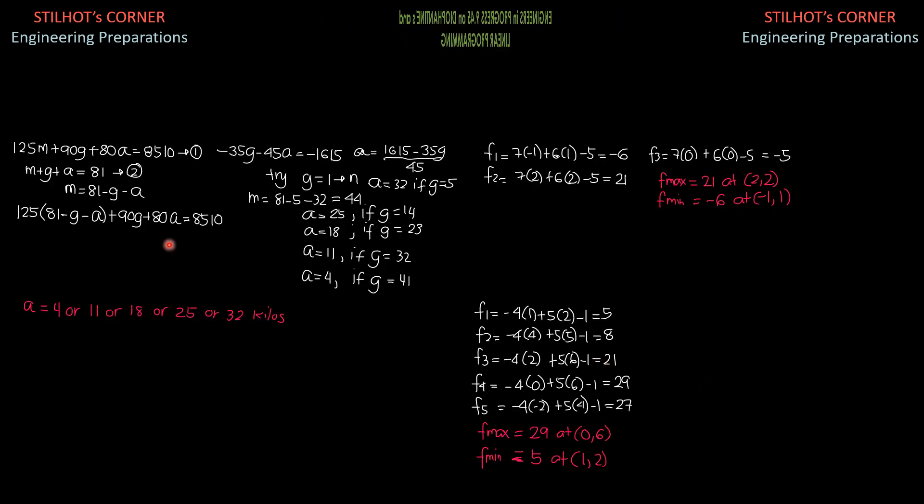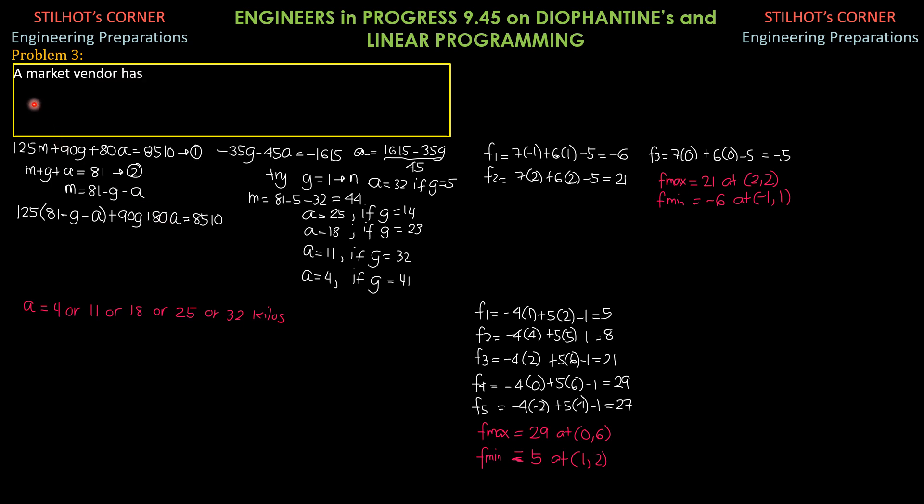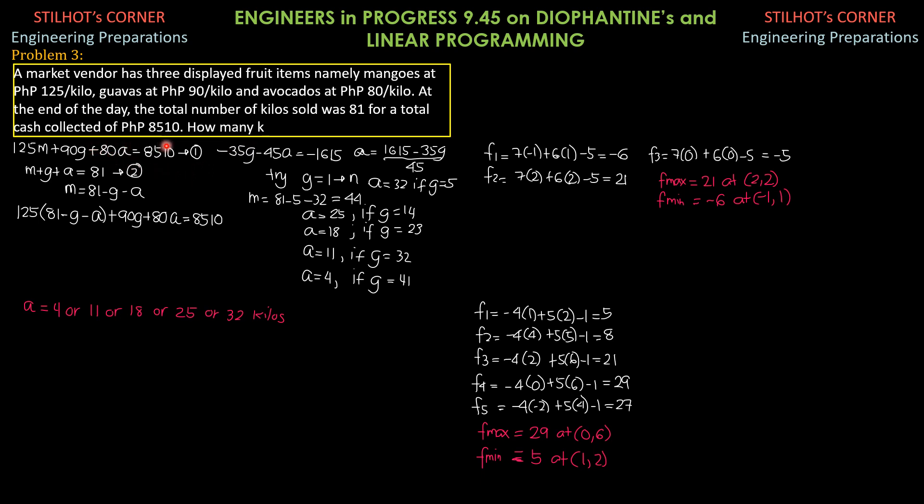Another problem. Problem 3. A market vendor has 3 displayed fruit items, namely mangoes at 125 pesos per kilo, guavas at 90 pesos per kilo, and avocados at 80 pesos per kilo. At the end of the day, the total number of kilos sold was 81 for a total cash collected of 8,510 pesos. How many kilos of avocados were sold?